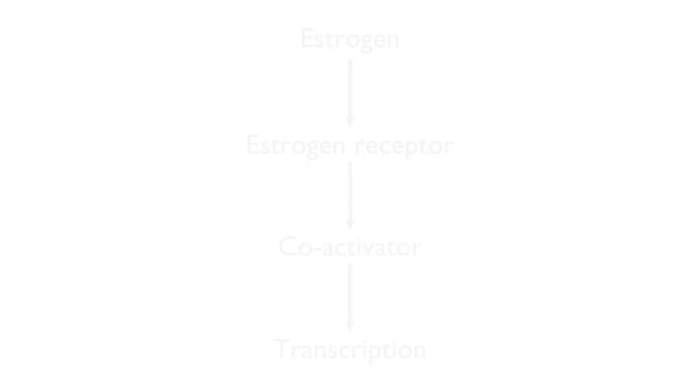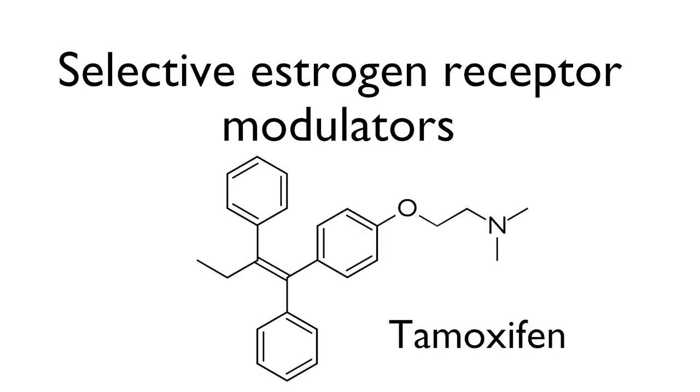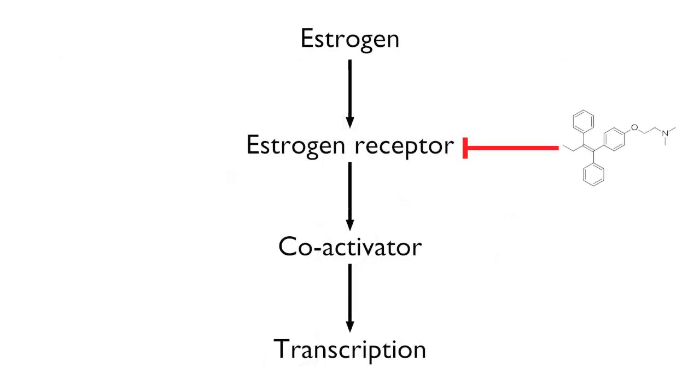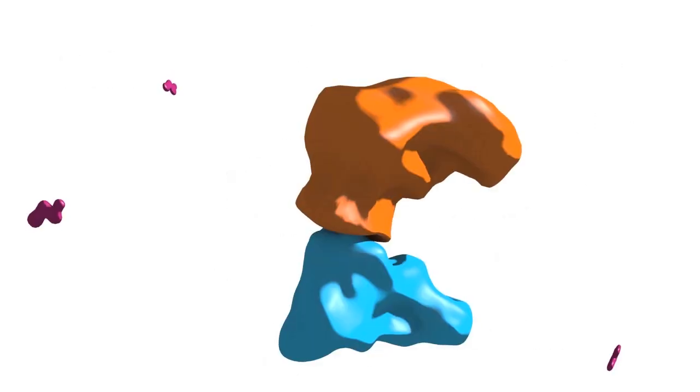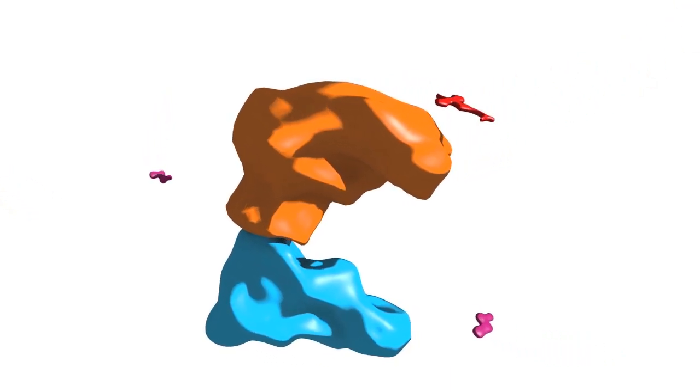One class of drugs known as selective estrogen receptor modulators, which includes drugs such as tamoxifen, are highly successful in treating some types of breast cancer in which the tumor cells require estrogen to proliferate. These drugs can bind the ligand binding domain of estrogen receptor in place of estradiol.